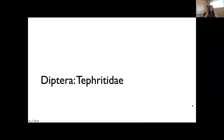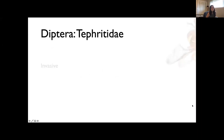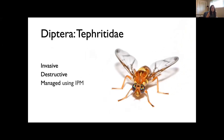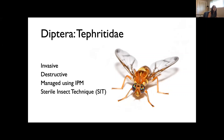At our research center, one of our main areas of research are tephritid fruit flies. This is because they represent a family of insects that are highly invasive and destructive agricultural pests. They are largely managed using integrated pest management techniques such as powerful lures, male annihilation, insecticides, quarantine efforts, and the sterile insect technique, which my research program is mostly focused on.